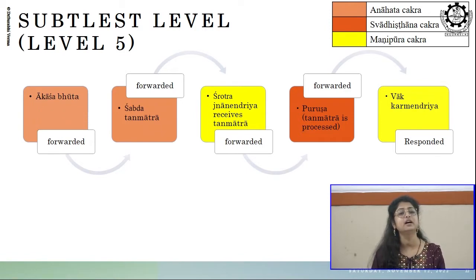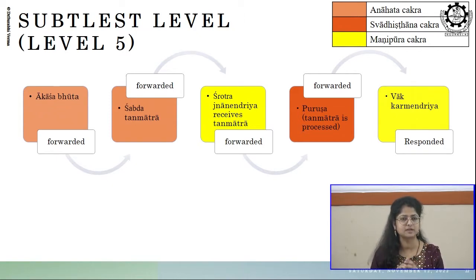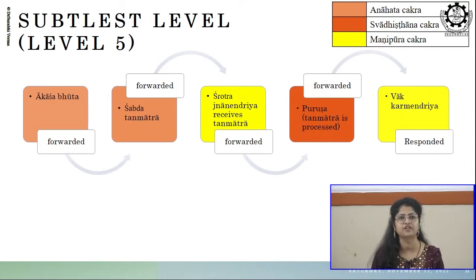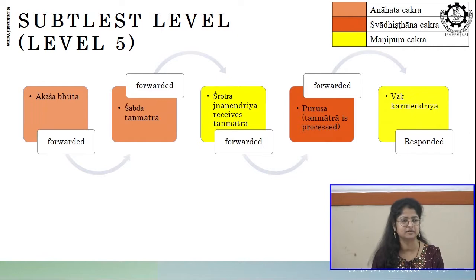In a general understanding Yamaraj is the deity of death, but in real understanding Yamaraj is Dharmaraj — the one who decides the fruit of your actions as per your actions performed. That is Dharmaraj, and the name of that Dharmaraj is Yamaraj. So what is the story in Yam-Nachiketa samvad?